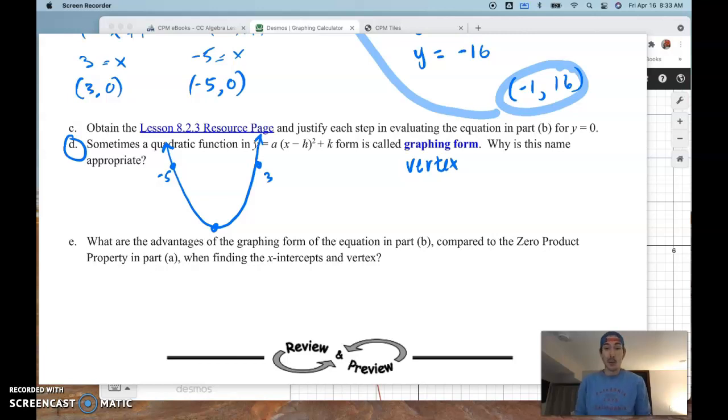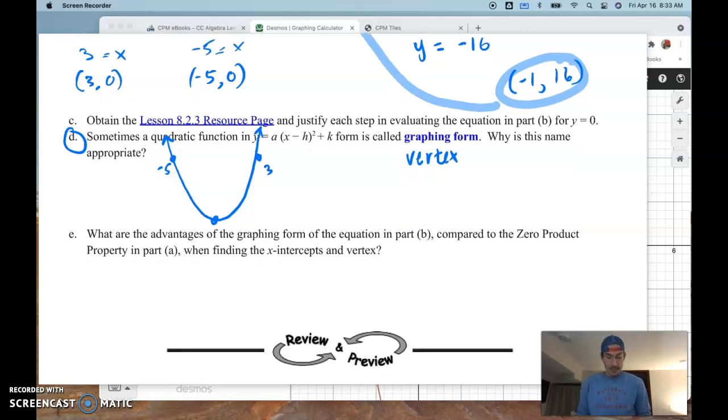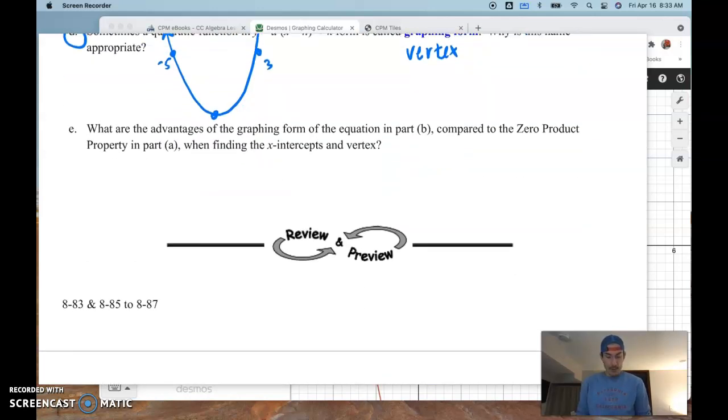Depending on what the outcome is, right? What are we trying to do with the information? Ladies and gentlemen, just a tiny bit of review preview here. And that review preview is right here at the bottom of my page. It is 83, 85, 86, and 87.